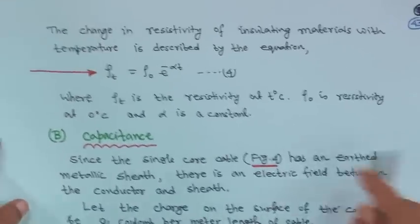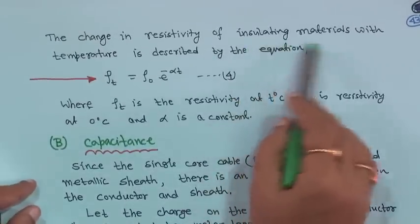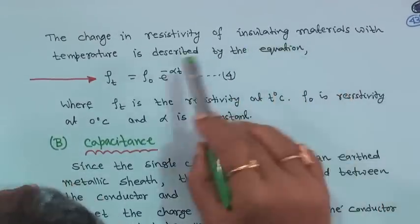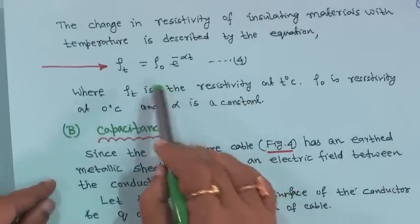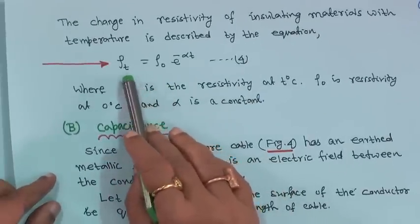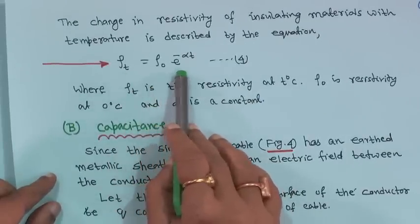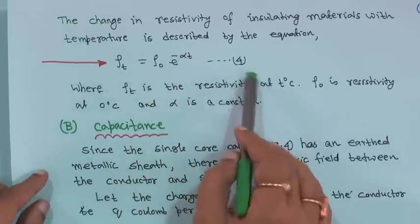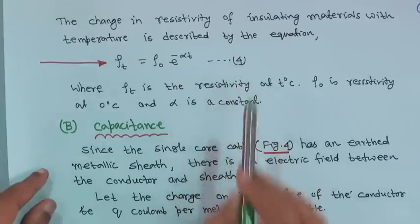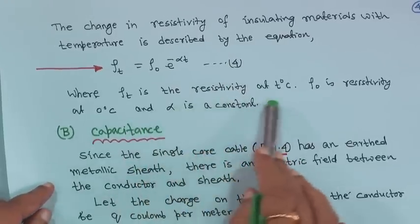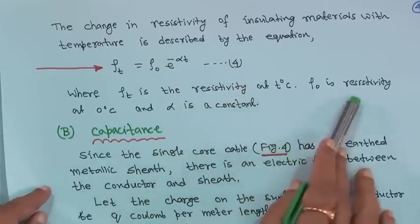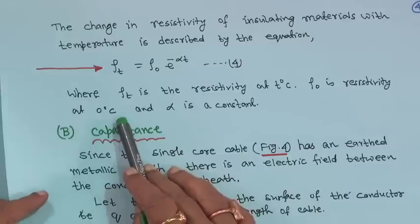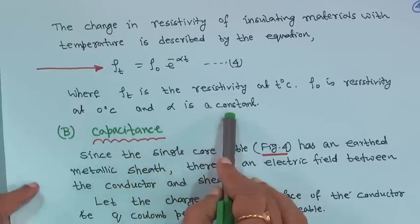The change in resistivity of insulating materials with temperature is described by the equation: ρ_t = ρ_0 × e^(−αt), where ρ_t is the resistivity at t°C, ρ_0 is the resistivity at 0°C, and α is a constant.